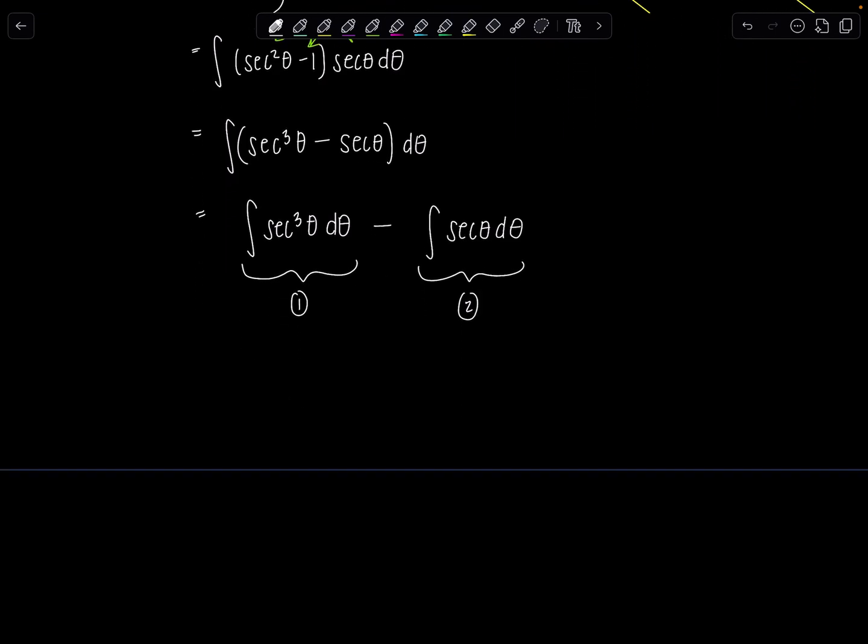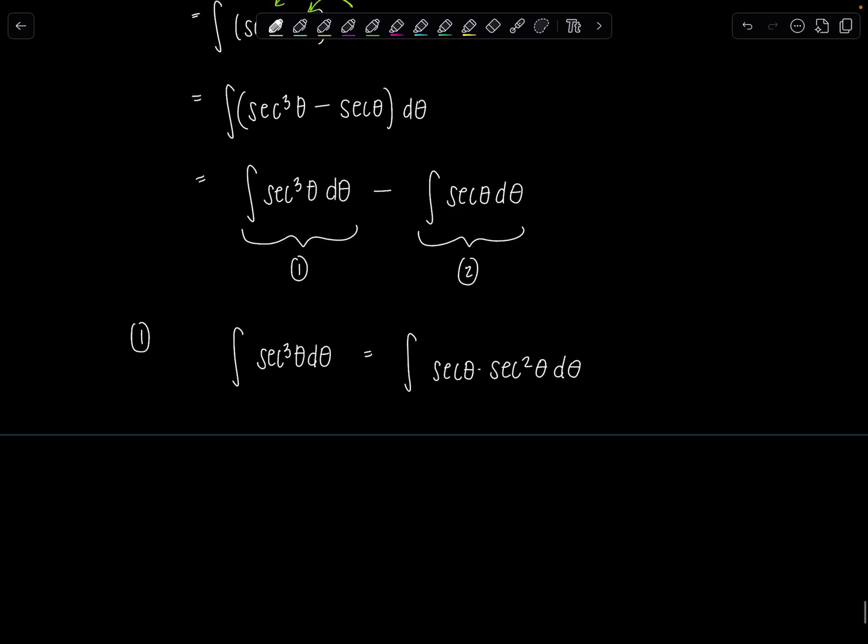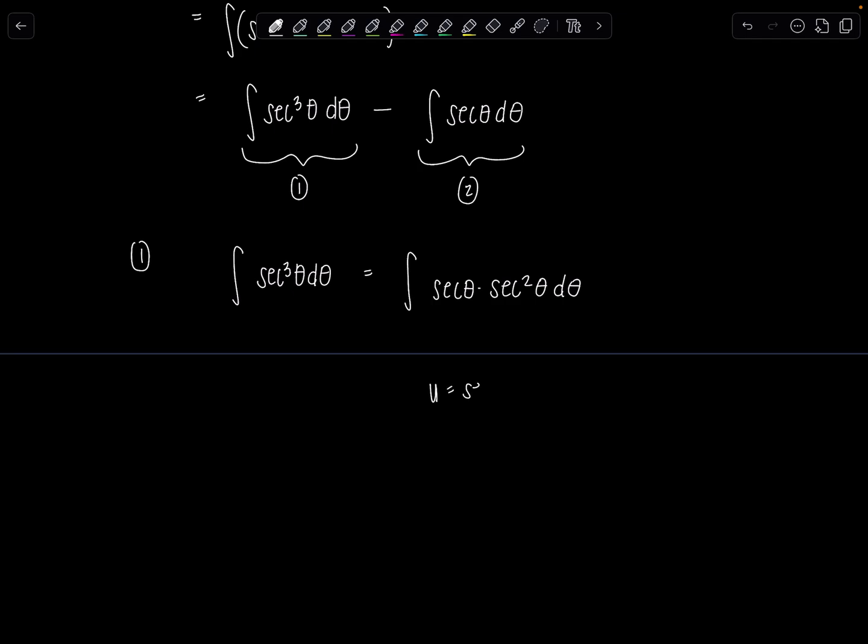So let's work on integral number one, secant cubed theta, d theta. So the way you figure out this antiderivative is first you're going to rewrite it as secant theta times secant squared theta, d theta. And we're going to do integration by parts. So we let u be secant theta, and dv is secant squared theta, d theta. Then that means du would be secant theta, tan theta, d theta. And v is just going to be tangent theta.